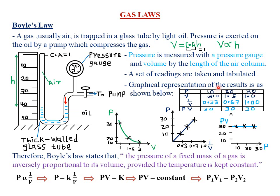If we sketch a graph of pressure against volume: when pressure is 10, volume is 3; when pressure is 20, volume is 1.5; when pressure is 30, volume is 1. The resulting graph shows that pressure and volume are inversely proportional — when pressure is maximum the volume is minimum, and when pressure is minimum the volume becomes maximum.